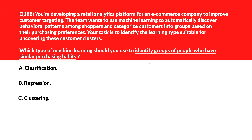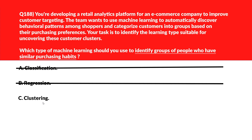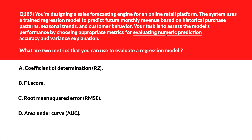Now let's look at this question — we need to identify a group of people who have similar purchasing habits, like an e-commerce scenario. Option A says classification — classification assigns items to predefined categories without discovering hidden grouping patterns, so it's out. Option B says regression — there are no numeric values involved here, so regression can't help. Option C says clustering — clustering detects natural groupings in data based on feature similarity without labeled outputs, which is exactly what this question requires. Option C, clustering, is the right answer.